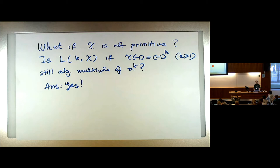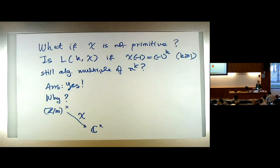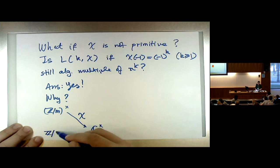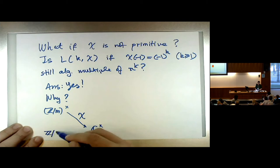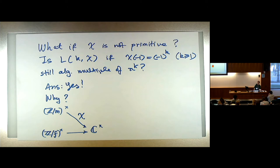If chi is not primitive, is L(k, chi) — where k matches the parity of chi — still an algebraic multiple of π^k? The answer is yes. Now if you go to the lowest modulus the character comes from, that's going to be a primitive character. We call that modulus f, the conductor. The conductor of a Dirichlet character is the modulus of the primitive character it comes from. So if your character is primitive, its conductor is its own modulus. If you had a character mod 8 that's periodic mod 4, then the conductor is 4. The trivial character mod anything has conductor 1.